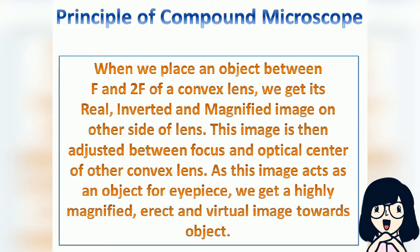When we place an object between F and 2F of a convex lens, we get its real, inverted, and magnified image on the other side of the lens. This image is then adjusted between the focus and optical center of the other convex lens. As this image acts as an object for the eyepiece, we get a highly magnified, erect, and virtual image towards the object.